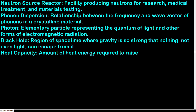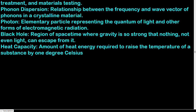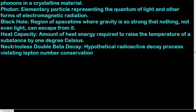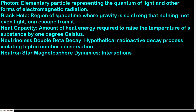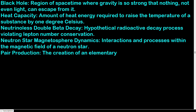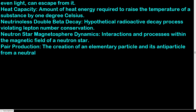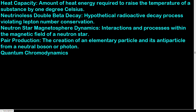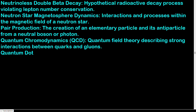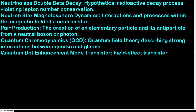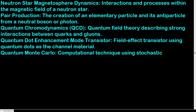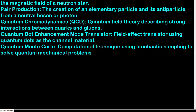Neutrinoless double beta decay: hypothetical radioactive decay process violating lepton number conservation. Neutron star magnetosphere dynamics: interactions and processes within the magnetic field of a neutron star. Pair production: the creation of an elementary particle and its antiparticle from a neutral boson or photon. Quantum chromodynamics (QCD): quantum field theory describing strong interactions between quarks and gluons. Quantum dot enhancement mode transistor: field effect transistor using quantum dots as the channel material. Quantum Monte Carlo: computational technique using stochastic sampling to solve quantum mechanical problems. Quantum spin lattice: arrangement of magnetic moments in a crystal lattice exhibiting quantum spin behavior.